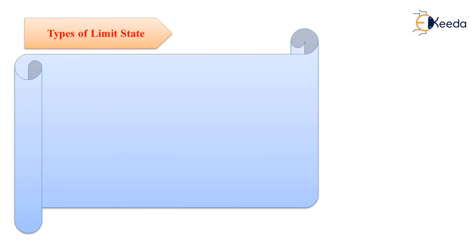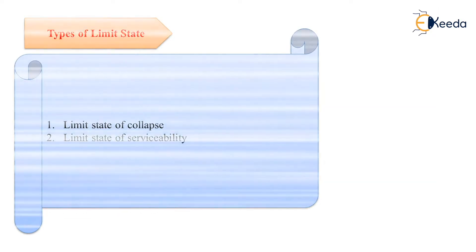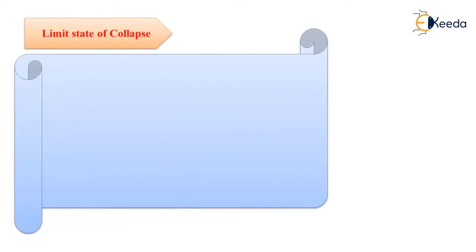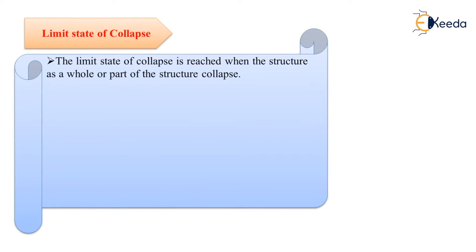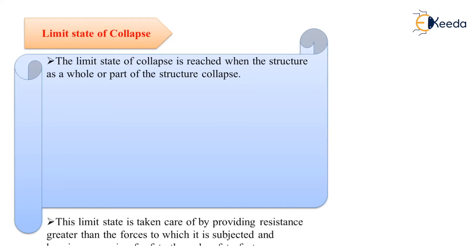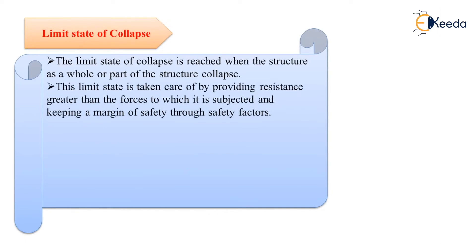The most important limit states considered in design are: number one, limit state of collapse, and number two, limit state of serviceability. The limit state of collapse is reached when the structure as a whole, or part of the structure, collapses. Collapse may occur due to the rupture of one or more members, or on account of formation of a mechanism, or due to elastic or inelastic instability, or from loss of equilibrium.